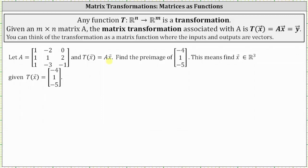We are given matrix A and the transformation T of vector x equals A times vector x. Because matrix A is a three by three matrix, we know we have a transformation from R3 to R3. We're asked to find the pre-image of the vector negative four, one, negative five. This means you want to find the input vector x in R3, given that the output or image T of vector x equals negative four, one, negative five.